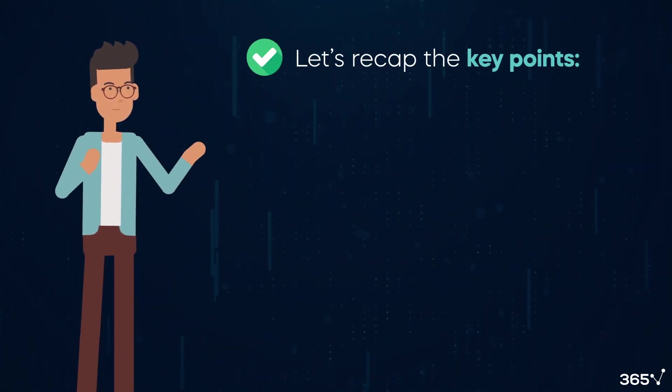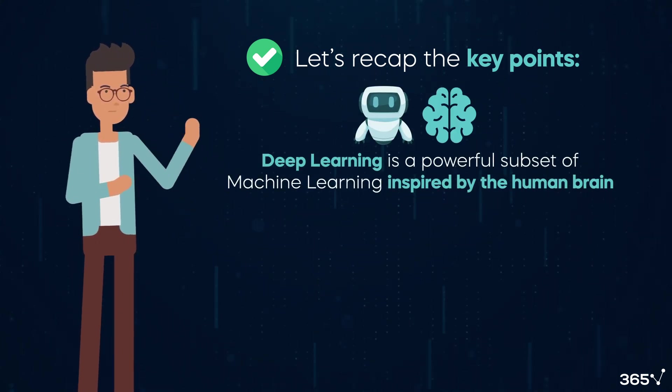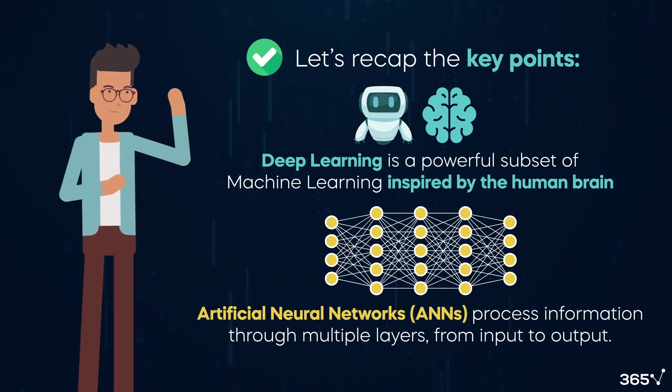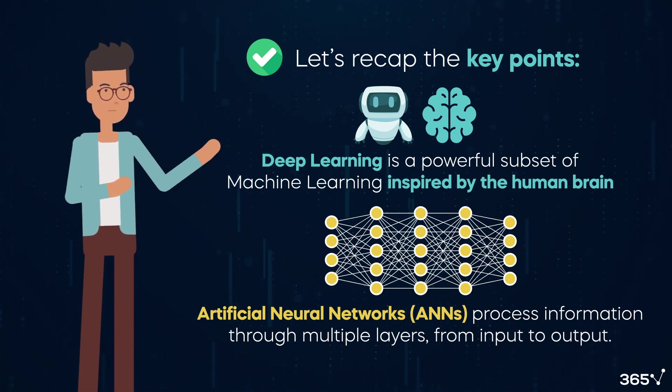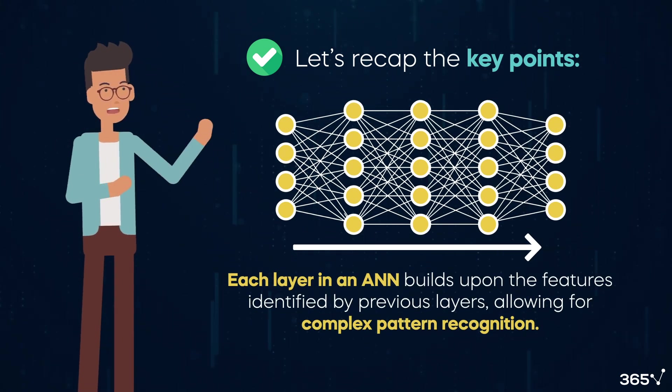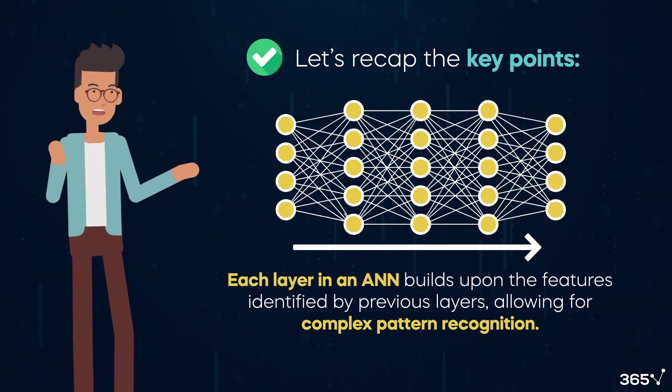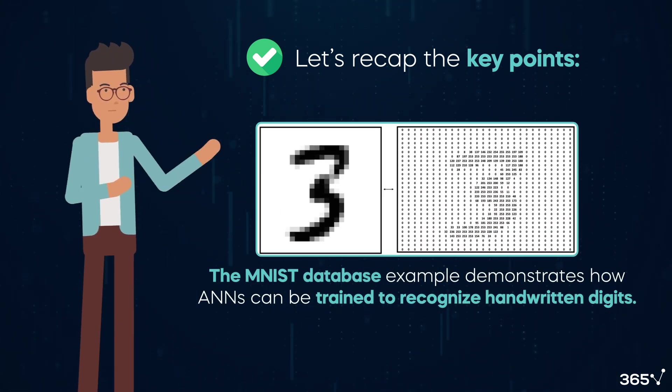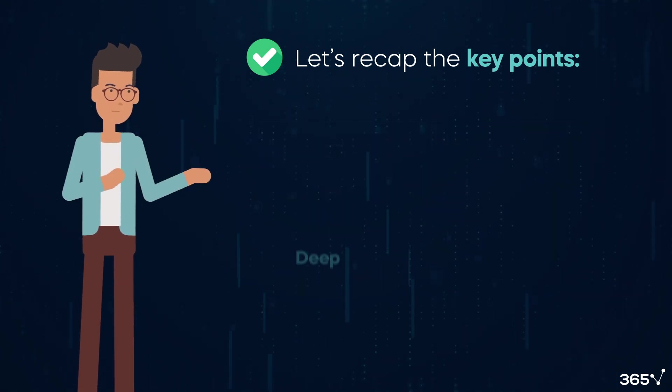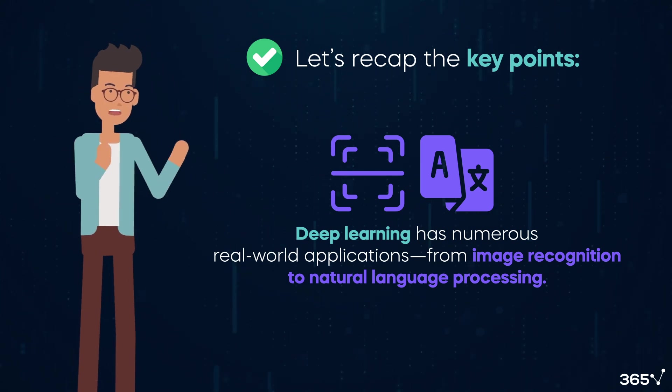Let's recap the key points we've covered in this video. Deep learning is a powerful subset of machine learning, inspired by the human brain. Artificial neural networks process information through multiple layers, from input to output. Each layer in an ANN builds upon the features identified by previous layers, allowing for complex pattern recognition. The MNIST database example demonstrates how ANNs can be trained to recognize handwritten digits. Deep learning has numerous real-world applications, from image recognition to natural language processing.